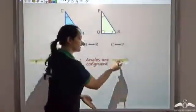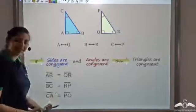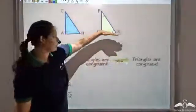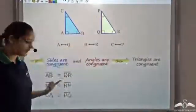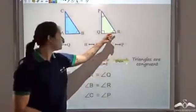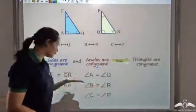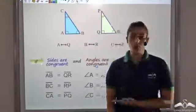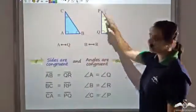When sides are congruent and angles are congruent, triangles will be congruent. These two triangles are congruent when all three sides are equal: AB equals QR, BC equals PR, and AC equals QP. The three angles are also equal: A equals Q, B equals R, and C equals P. With corresponding sides and corresponding angles all equal, triangle CAB is congruent to triangle PQR.